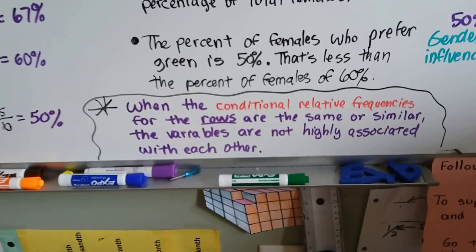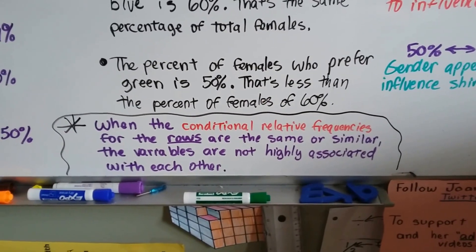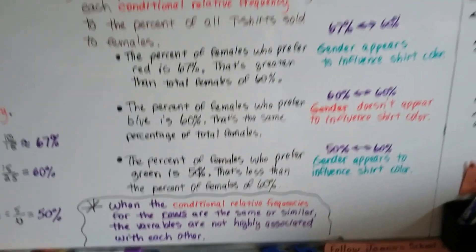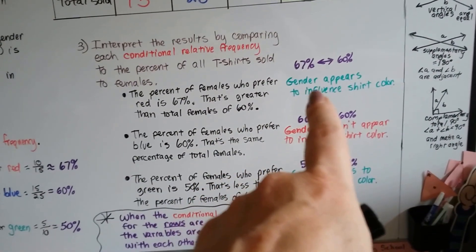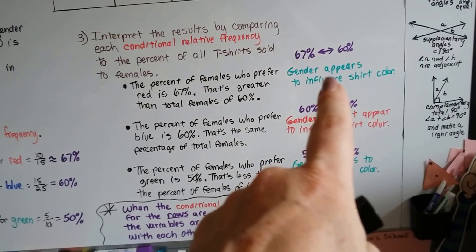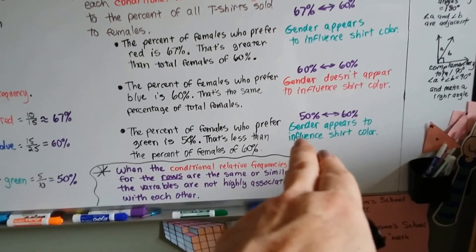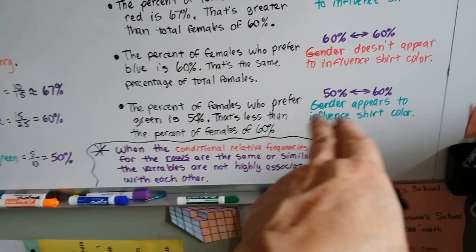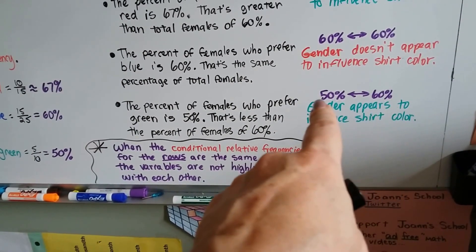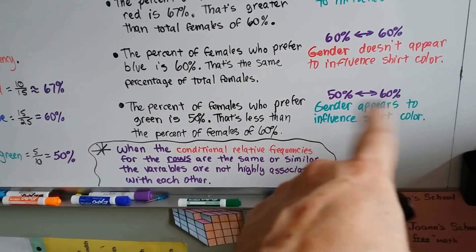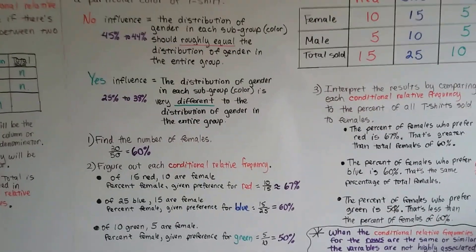Now, when the conditional relative frequencies for the rows are the same or similar, the variables are not highly associated with each other. There's no association. So in this one, 60 to 67, because that's getting close to 70%, there is an influence, there is an association. This one had the same percentages, so there's no association, it didn't influence it. And for this one, there was a difference between the numbers, so there was an association. There were 60% female that only 50% liked green, so they liked another color more. So that's the possible associations between variables.